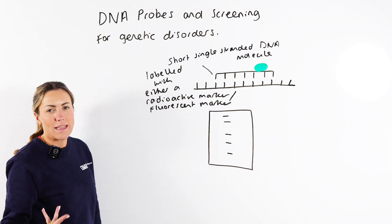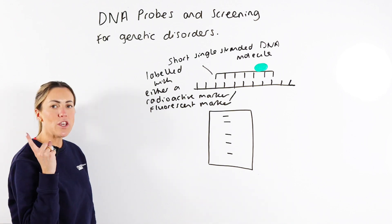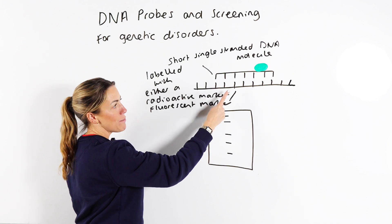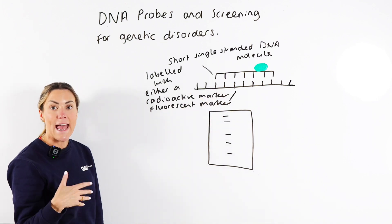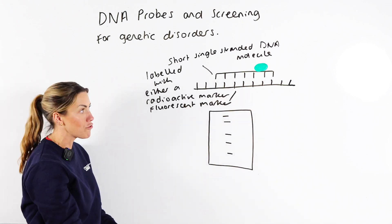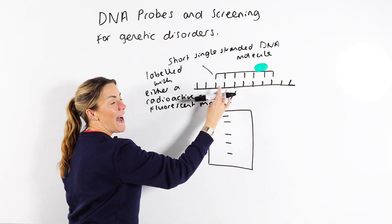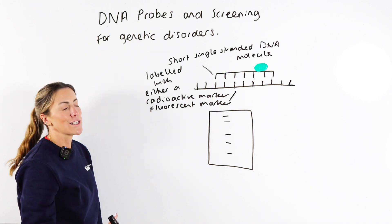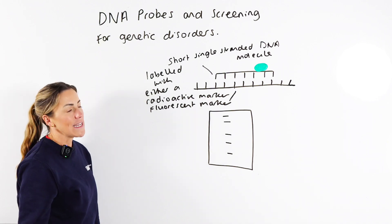The allele we're trying to locate in the person's DNA. Now when you add the DNA probe to the fragments of DNA from the individual, obviously what's going to happen because the bases are complementary, the DNA probe is going to hybridize, it's going to join with the individual's DNA.